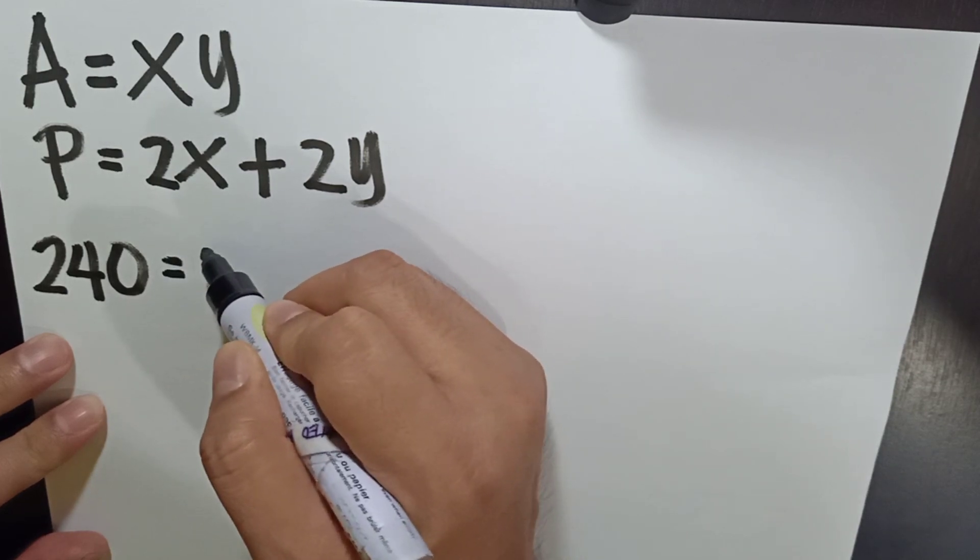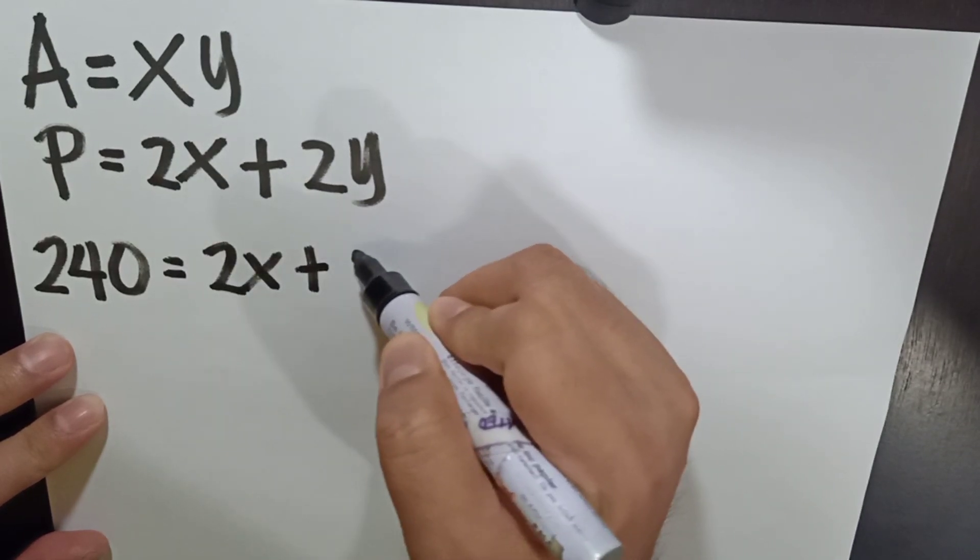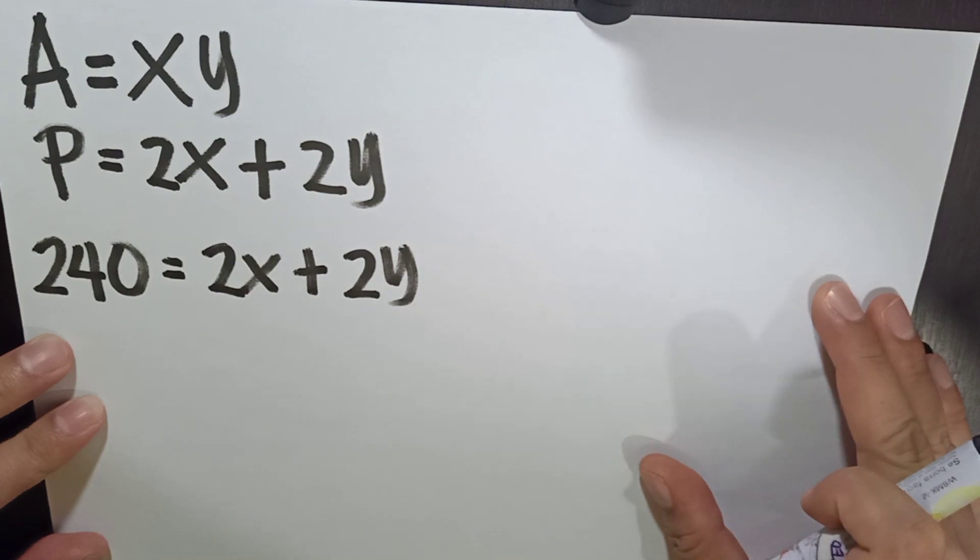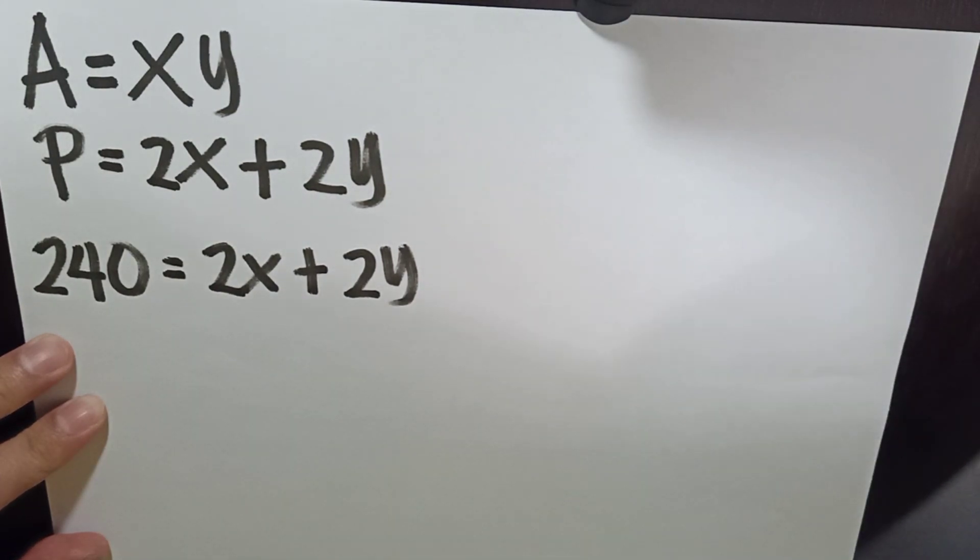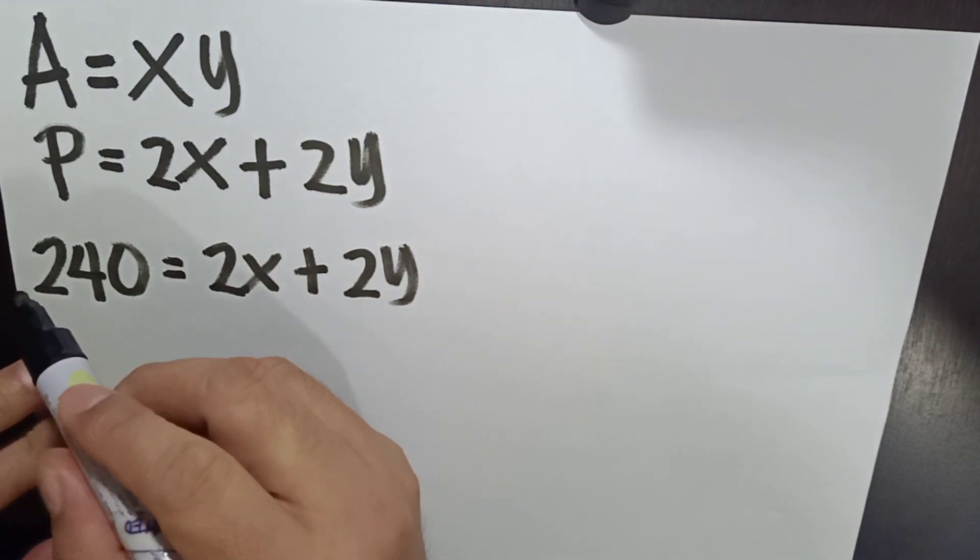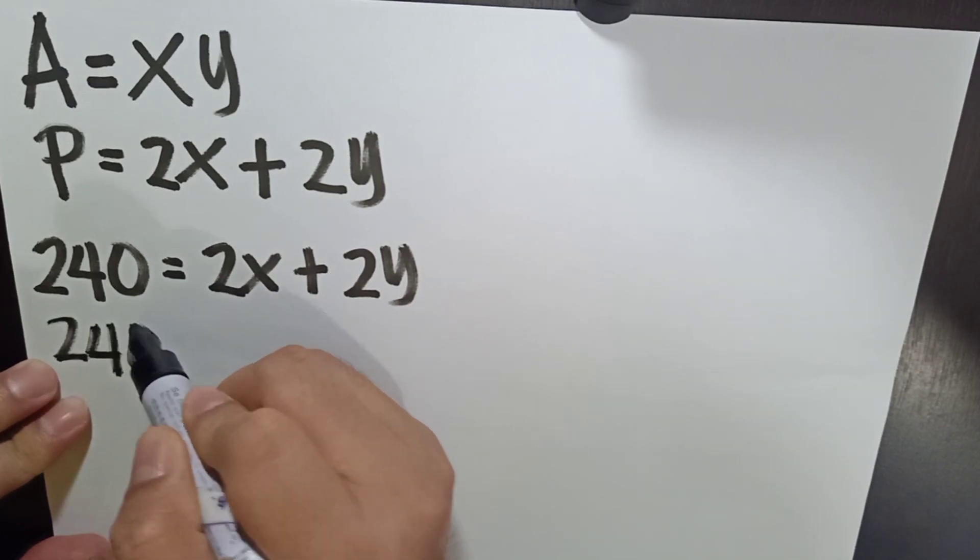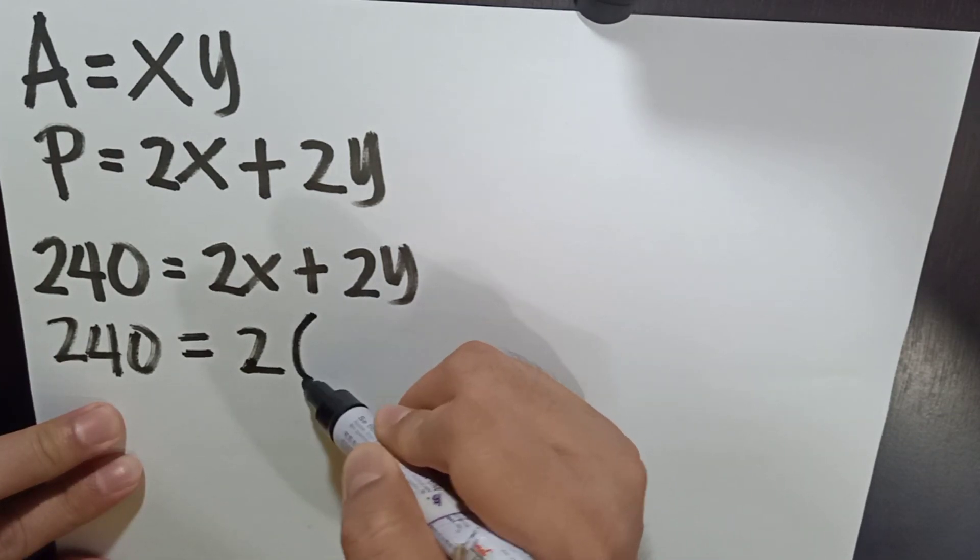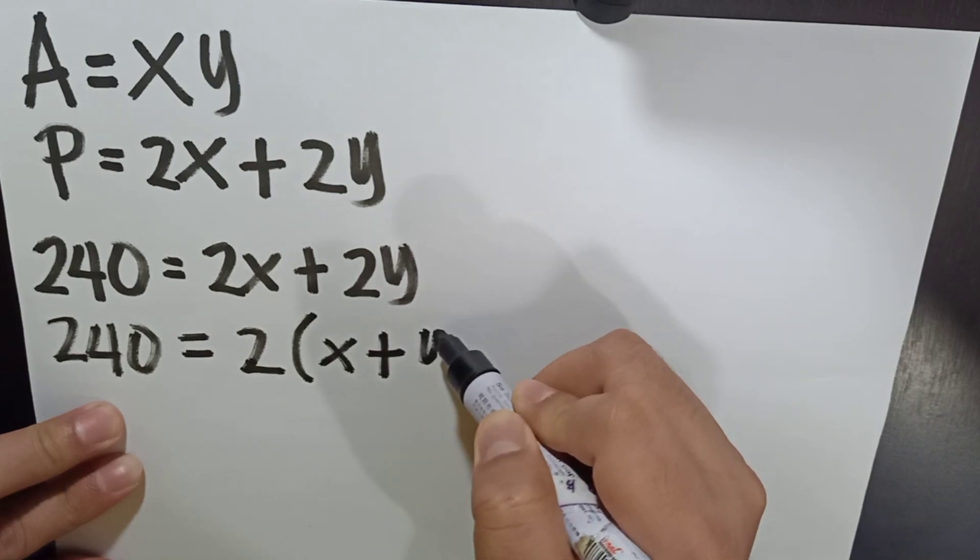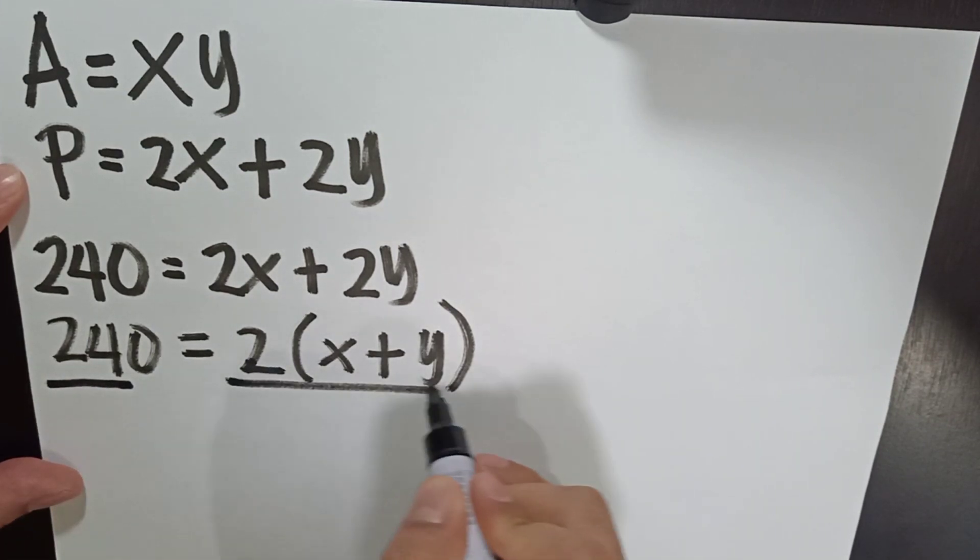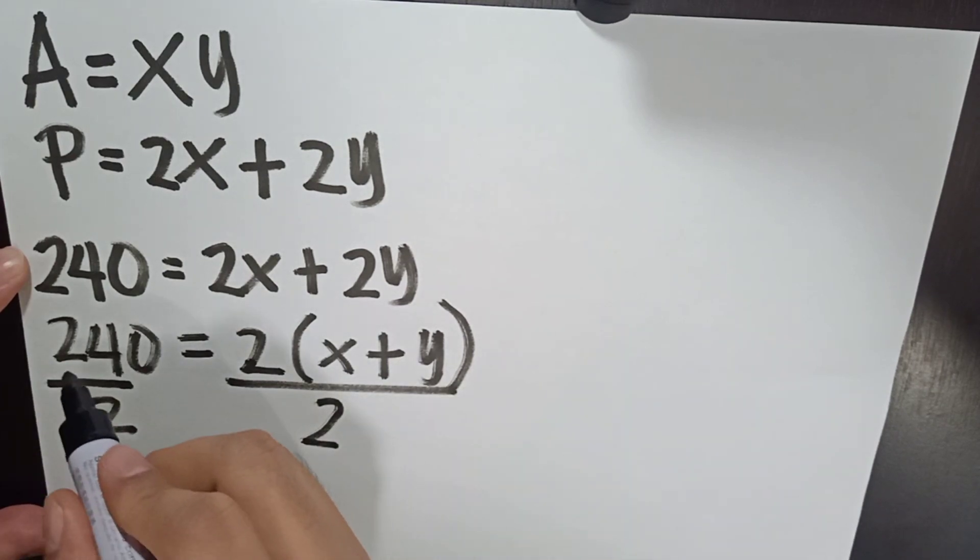Simplifying this, since we have to express the area of the field as a function of the width, we have to consider the value of x. By simplifying now, this is 240 equals 2x plus 2y, or get the common monomial factor. We have now 2 times x plus y. Then, to isolate x and y, we have to divide both sides by 2. This becomes 240 divided by 2 is 120.